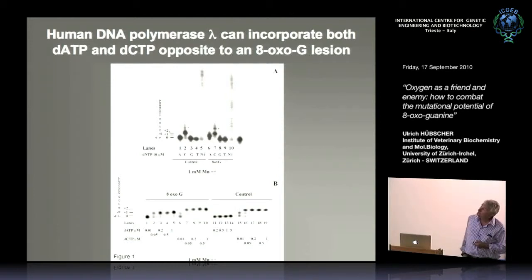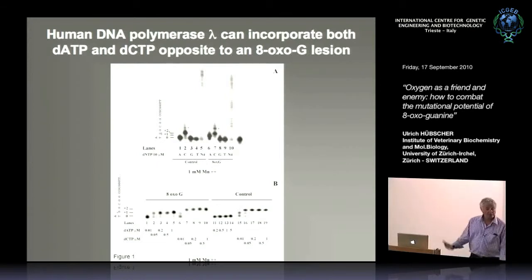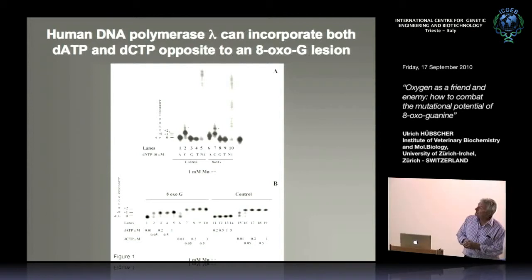In a normal template with two G's, adding A, C, G, or T shows only C incorporated — correct bona fide DNA polymerase activity — or full-length synthesis when all four nucleotides are added. When we introduce an 8-oxoG into the template, we see A incorporation or C incorporation and even template slippage, confirming this is a translesion polymerase that can bypass the lesion.